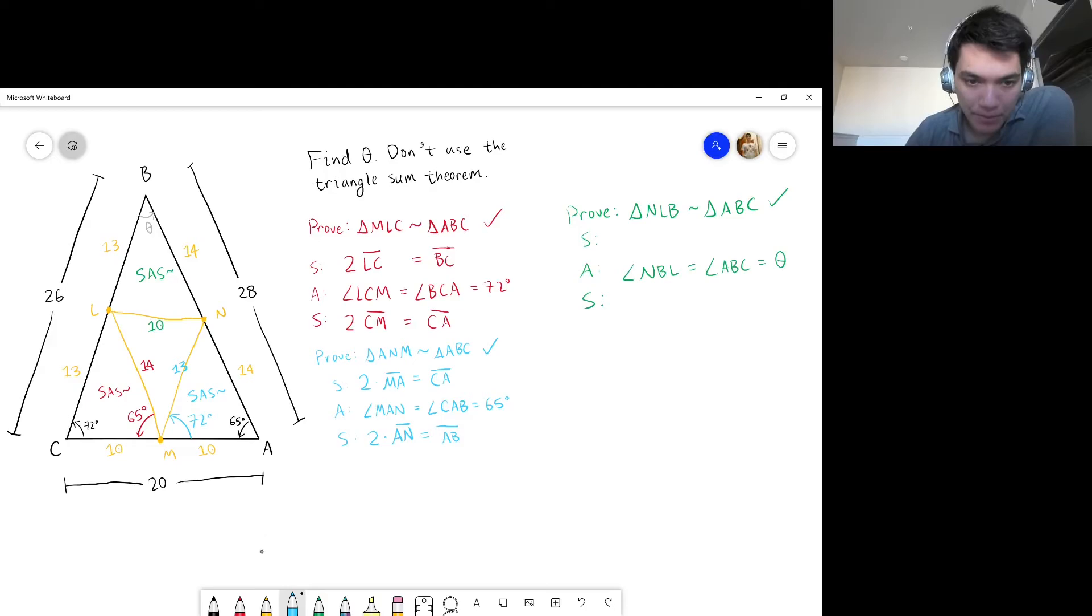Final step. Prove that triangle LMN is similar to triangle ABC. Now, we don't actually have any angle information about triangle LMN. We don't have this angle, we don't have this angle, and we don't have this angle, but we do have all three sides. So, let's use side, side, side.